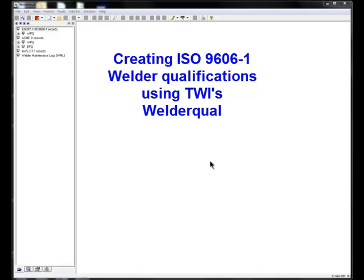ISO 9606-1 is different from EN287-1 in a couple of very significant ways. Firstly, the base metal thickness has become a non-essential variable for butt welds, with the deposit thickness becoming the important thickness variable.